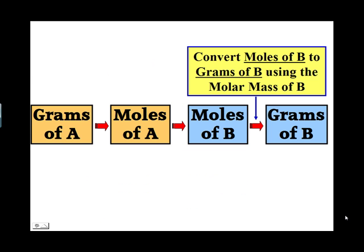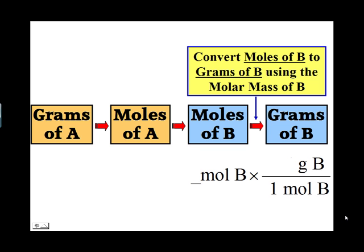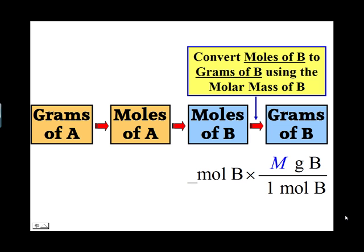In the last step, we must convert the moles of substance B to grams of substance B. We write the moles of B times the conversion factor grams of B over moles of B; 1 goes by the moles of B and the molar mass of B, M, is written by the grams of B. We have now gone from grams of A to moles of A to moles of B to grams of B. This series of conversions — grams to moles to moles to grams — is used in virtually every mass stoichiometry problem.